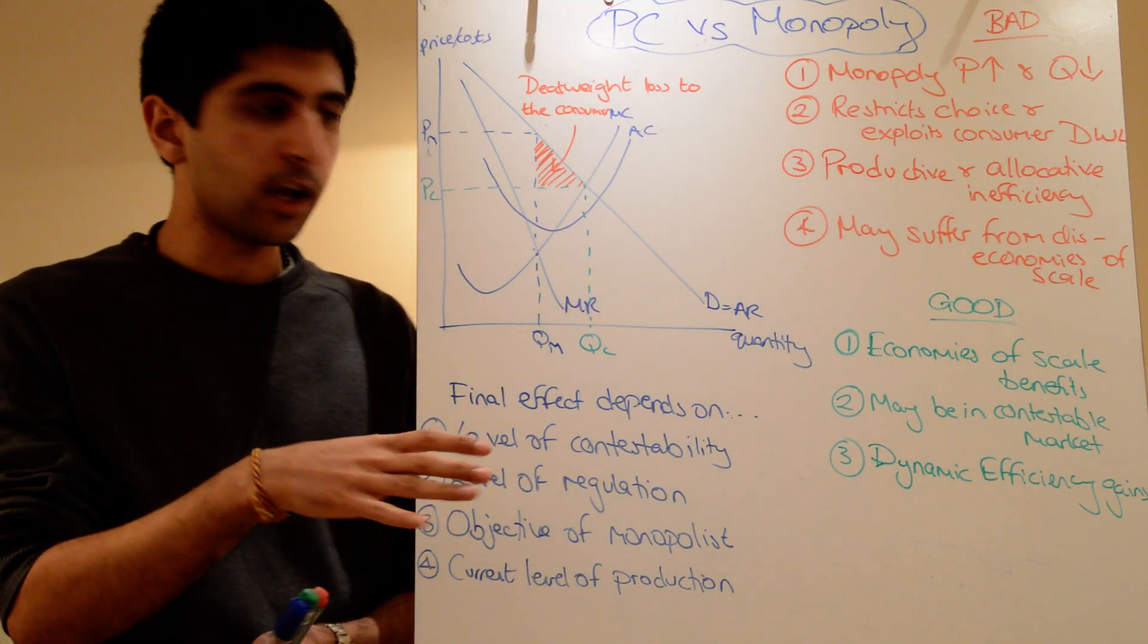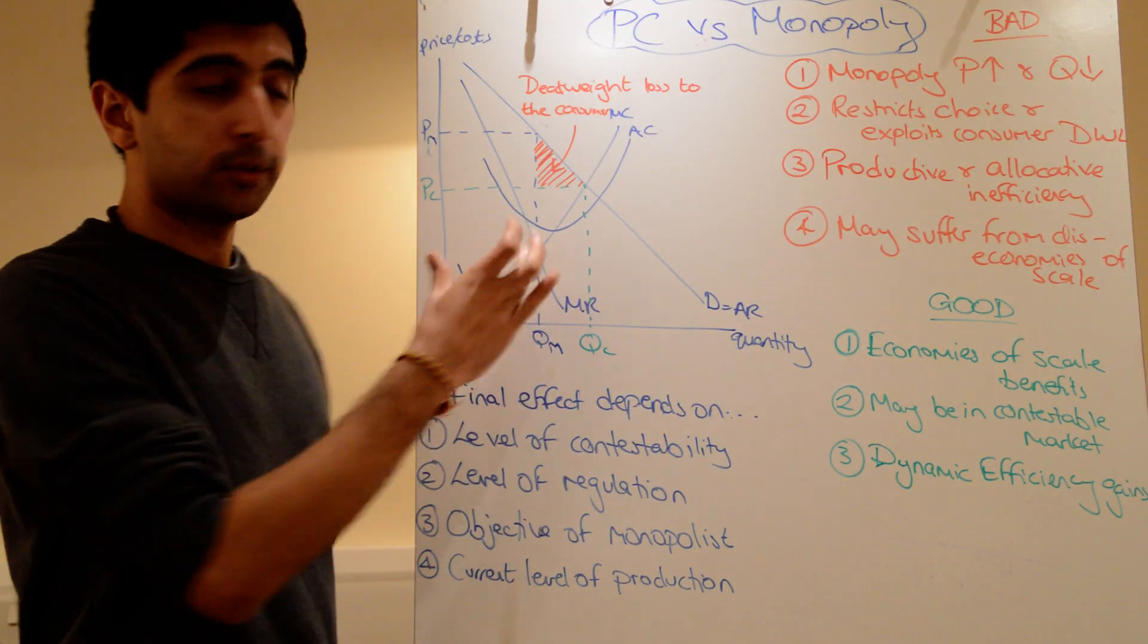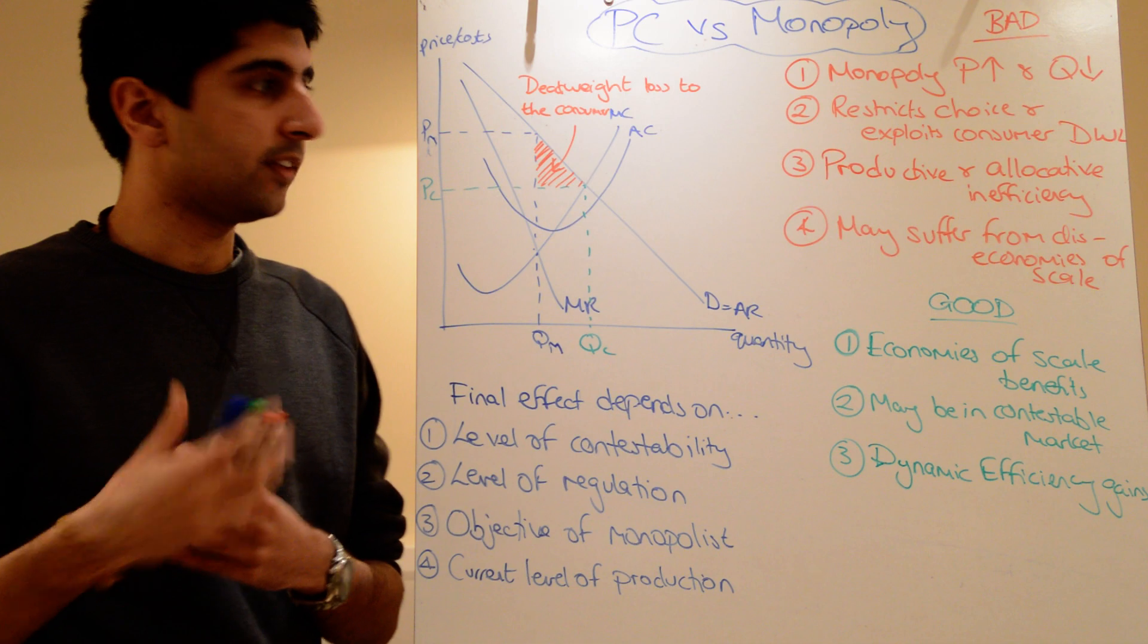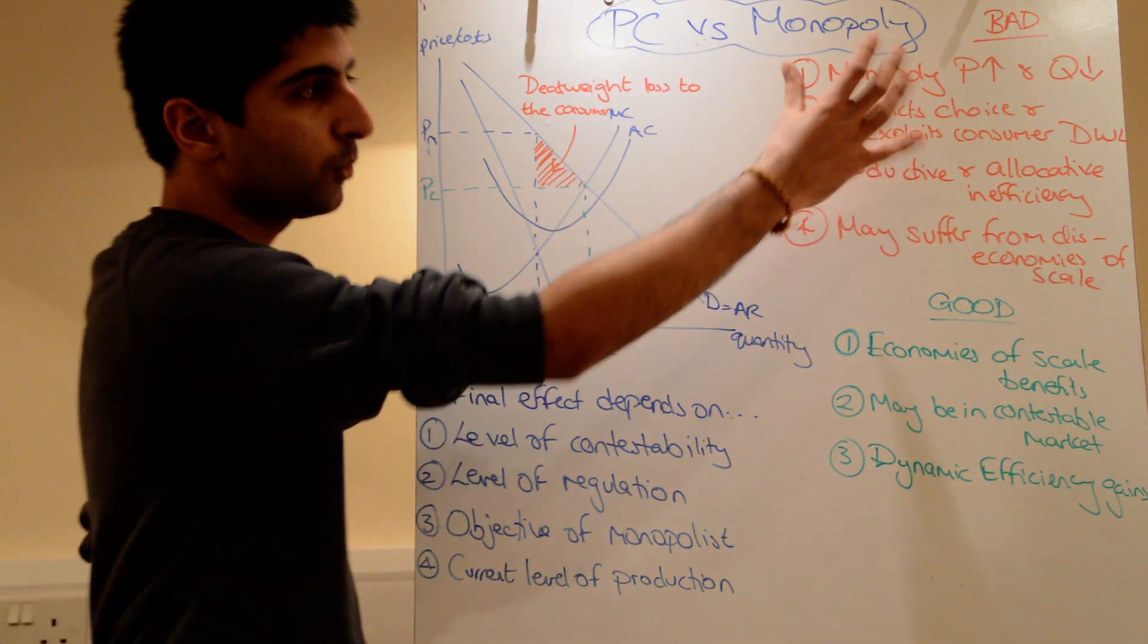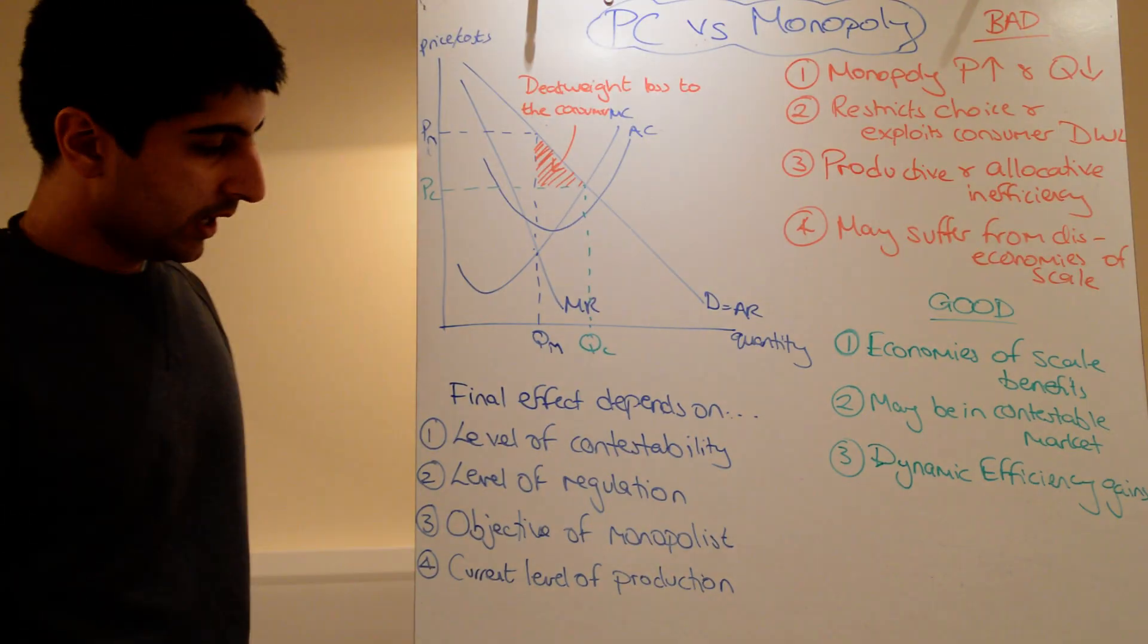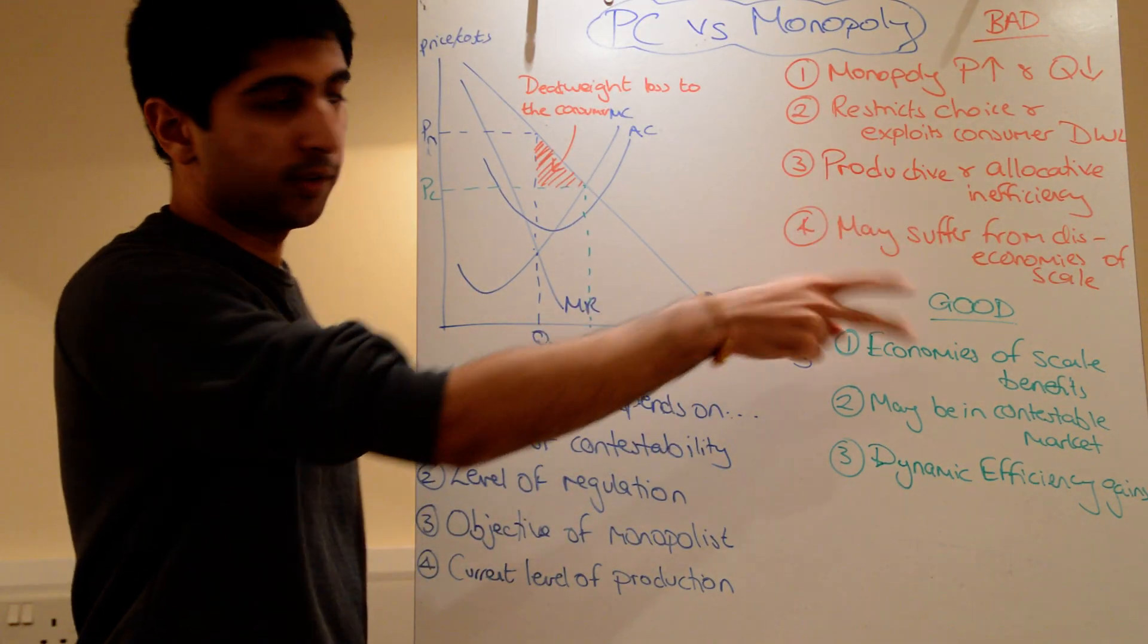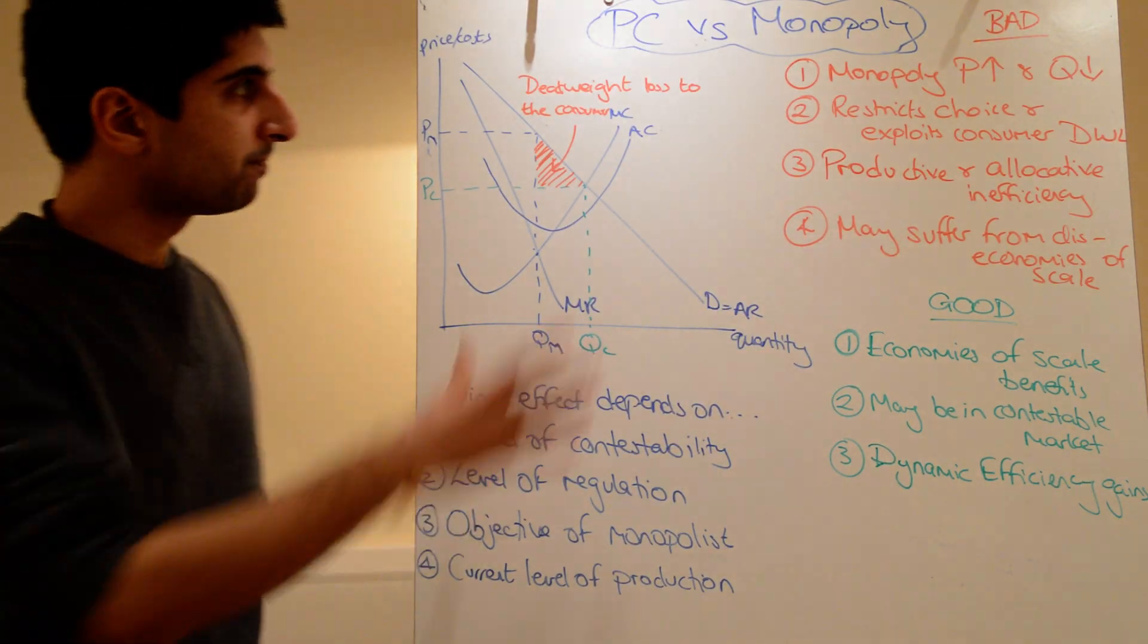Depends on the objective of the monopolist. We learned in a previous video that firms may have lots of different objectives. Not all firms want to profit maximize. So let's say this monopolist didn't profit maximize. Let's say it went for a more socially responsible objective, then maybe we don't need to worry about these bad points so much. At the same time, it depends on the current level of production with respect to economies of scale benefits or diseconomies of scale costs.